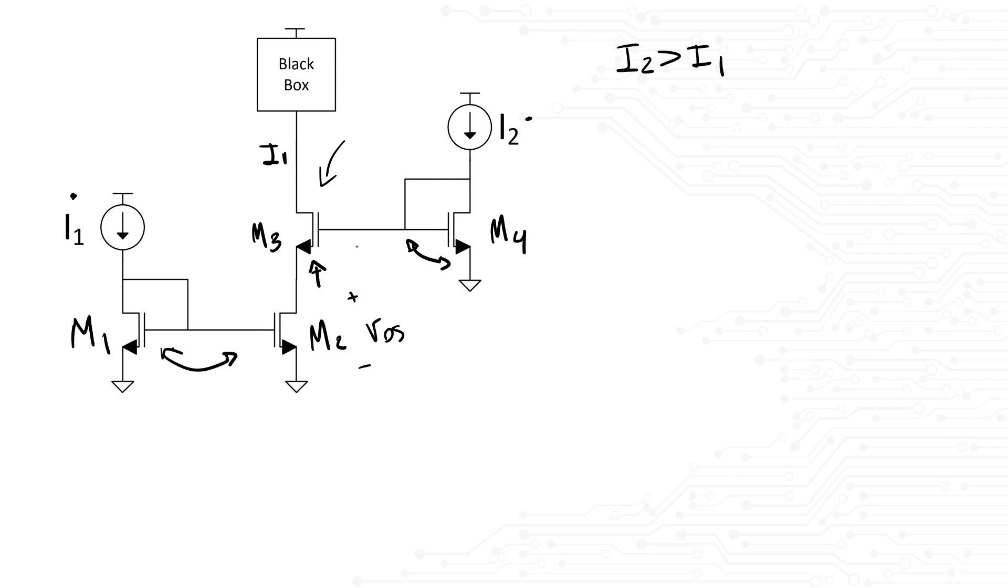We would answer the question in the following way. If I1 is large, then the VGS of M1 is high. That means the overdrive voltage of M2 must be high. However, if I2 is lower than I1, then the low VGS from M4 means the source of M3 is low and won't satisfy the overdrive voltage condition of M2. This puts M2 in triode.